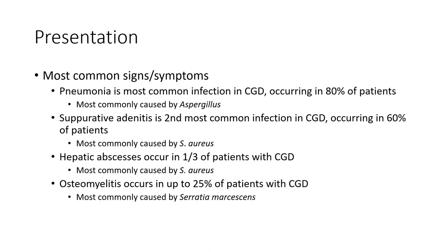Suppurative adenitis is the most common soft tissue infection in chronic granulomatous disease, occurring in 60% of patients. Most commonly caused by Staph aureus. Osteomyelitis is also a common infection in chronic granulomatous disease, most commonly caused by Staph aureus.